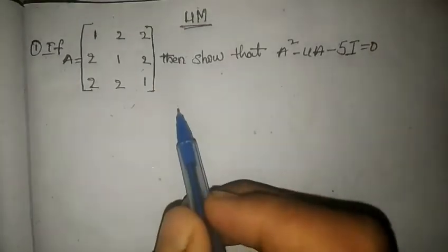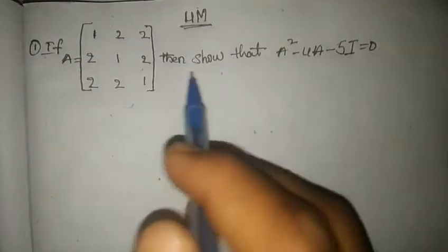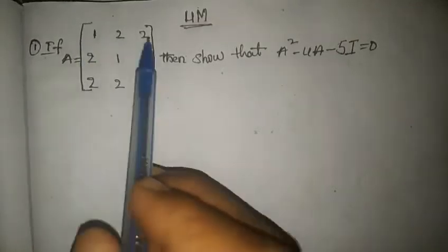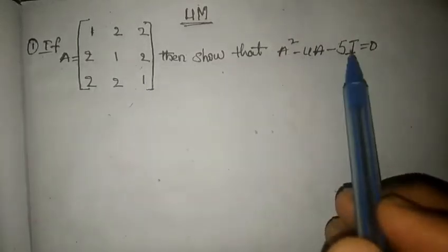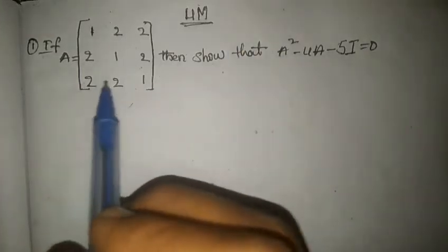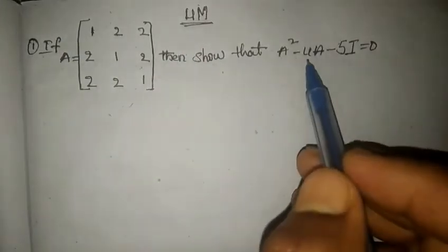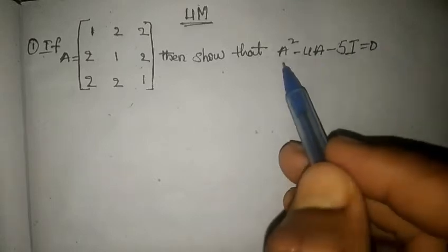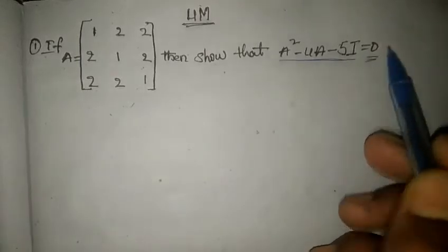Hello friends, today we are solving a four-marks important question for inter first-year students. Given the problem: if A equals [[1,2,2],[2,1,2],[2,2,1]], then show that A² - 4A - 5I = 0. We have to prove that this equation equals zero.